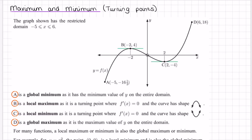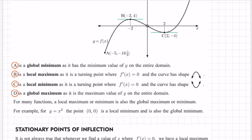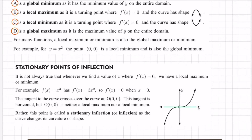The local is sometimes called relative as well. Looking at point A, this is a global minimum because it is the lowest possible y value out of the whole entire graph. B is a local maximum because it is a maximum turning point. C is a local minimum because it is a minimum turning point. And D is a global maximum because it has the largest y value out of the whole graph. We can also sometimes have stationary points of inflection.